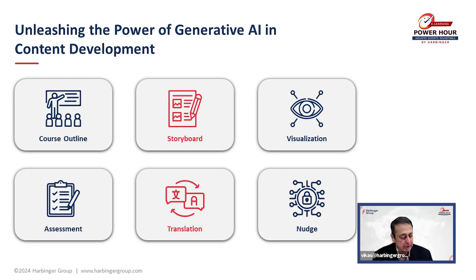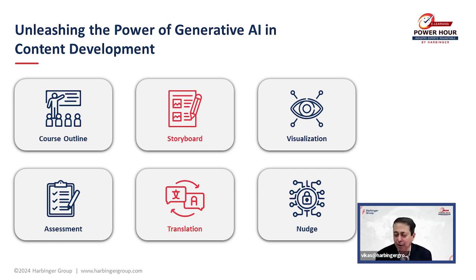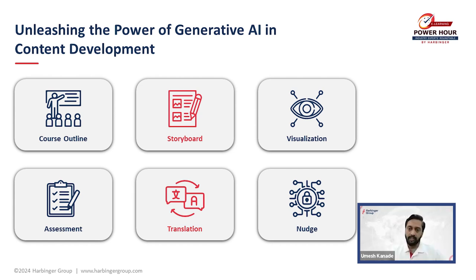Vikas summarizes: from producing outlines and storyboards, adding illustrations, pictures, and videos, automatically generating assessment questions, producing translations that retain layouts and formats, to repurposing content into shorter courses or nudges for delivery — all of this is possible with the generative AI framework directly or through APIs. A participant, Angela, asks about AI video tools for stitching videos together. Umesh confirms InVideo is one example, and they'll share a list of similar tools in the post-webinar resources.